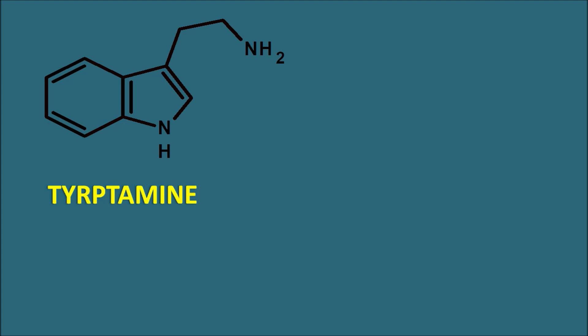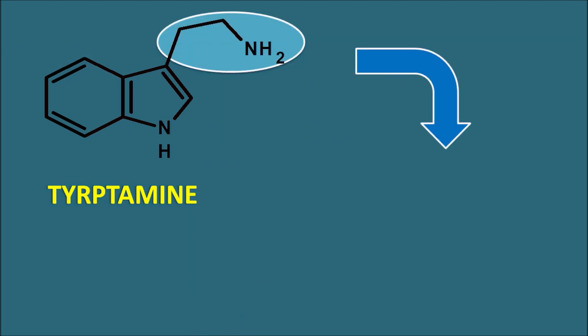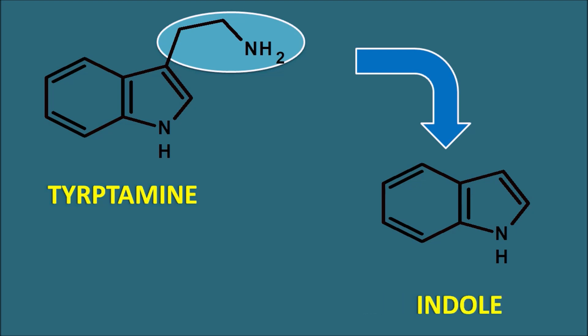Tryptamine can undergo further modification to produce different types of ring systems. One simple modification is removal of the side chain, such that tryptamine forms a simple indole nucleus — a 6-plus-5 membered ring system. In many indole alkaloids, this is further modified to produce larger structures.